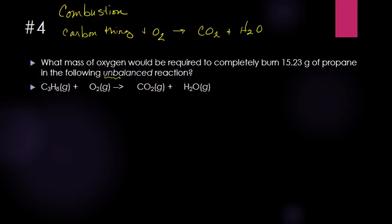This word right here is a big hint: 'unbalanced.' You cannot do stoichiometry, you cannot do mole relationships, unless the equation is balanced. For a combustion reaction, always balance the carbons first, then the hydrogens, then the oxygens — and it's a habit for oxygen to write O2. We have three carbons on the reactant side, so I'm going to put a 3 here. I have eight hydrogens on the reactant side, so I put a 4 in front of H2O.